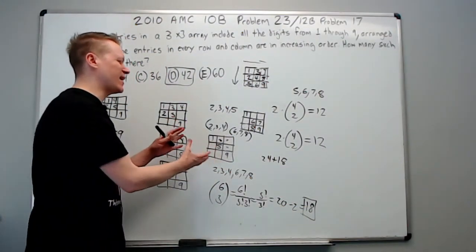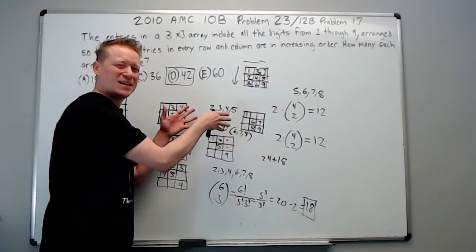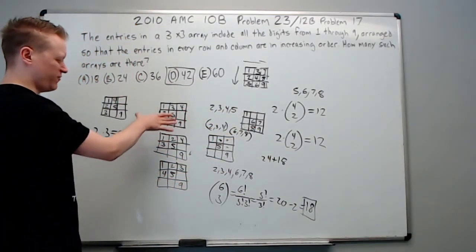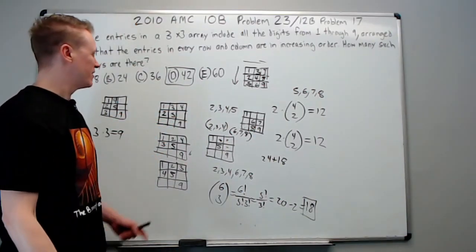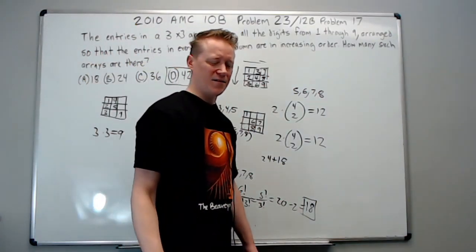But you have to think a little harder for this one. So that time that it takes you to come up with this and be confident in it, I almost feel like most people could do the listing, you know, a casework kind of method a little faster. Answer's 42. See you in the next one.